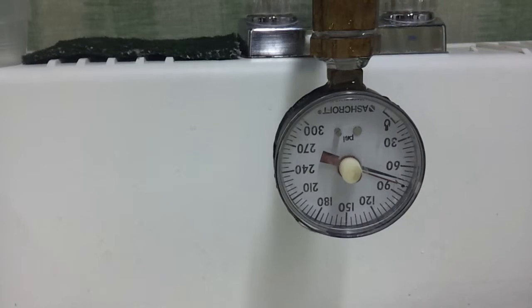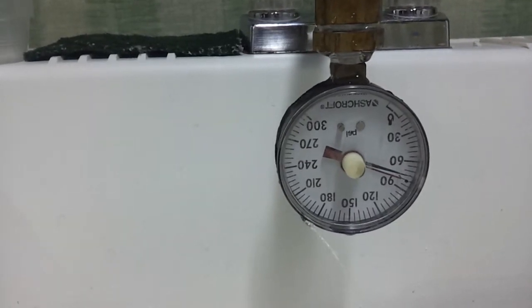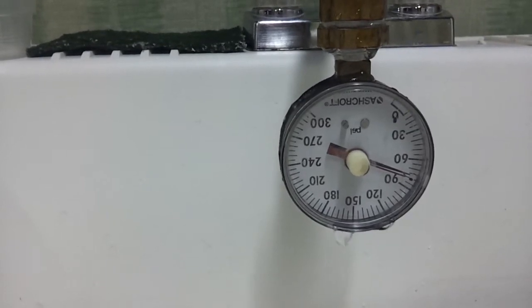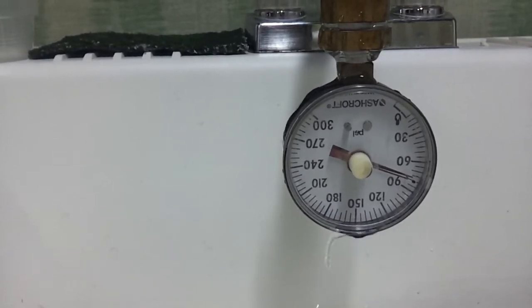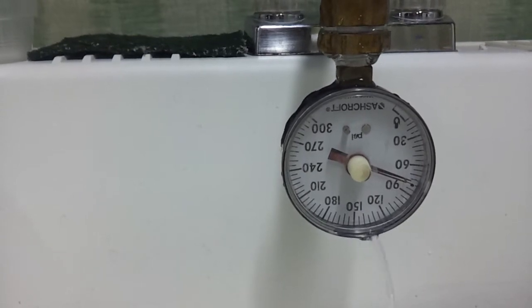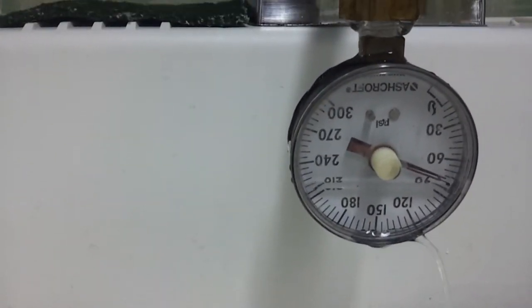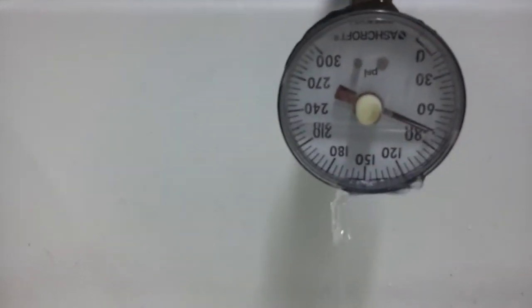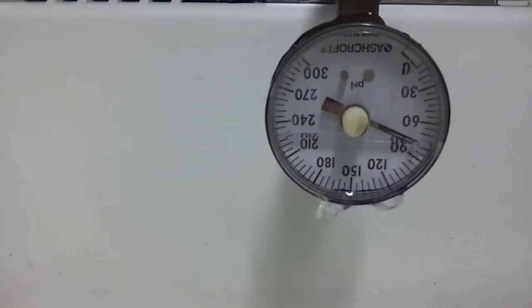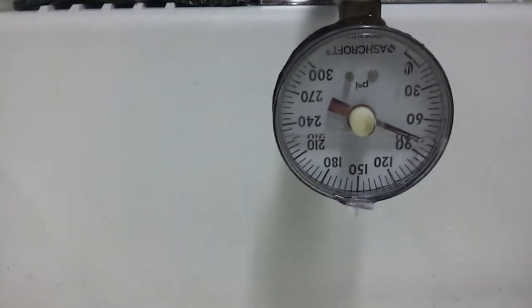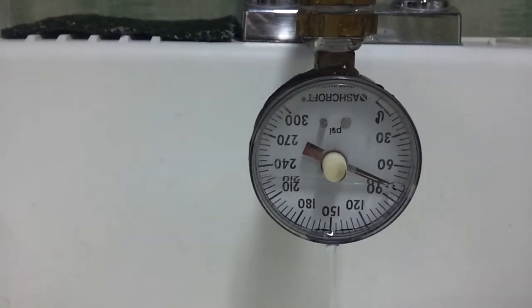Now watch, the black needle is going to just start to climb because the regulator is failing to lock up. It's going to push the red needle, actually going to push it past 90. This is how you test the lock-up feature on a regulator.